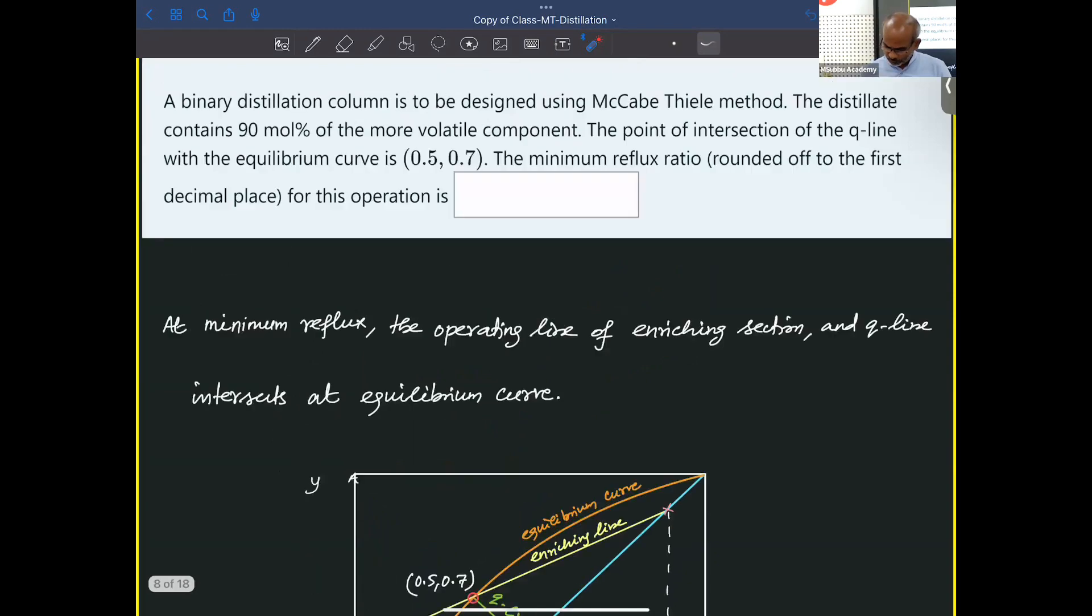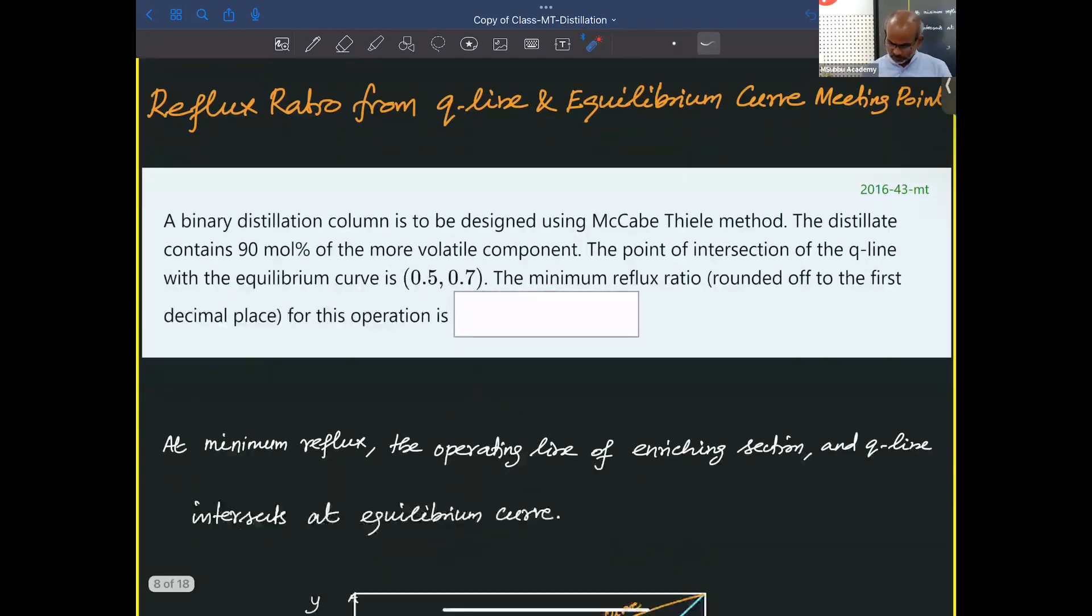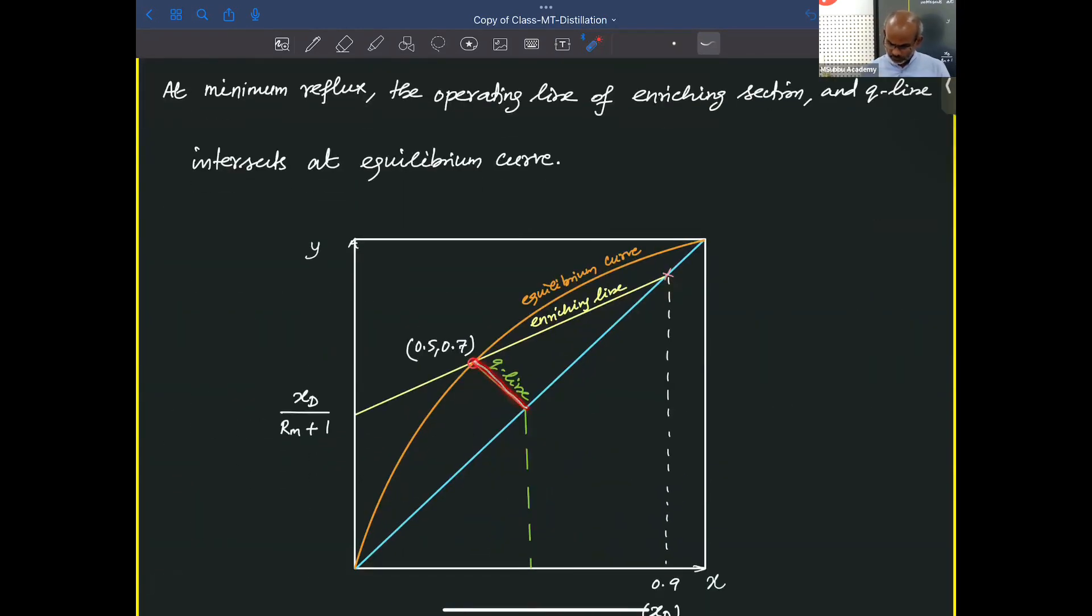What is asked is, we need to find the minimum reflux ratio. For minimum reflux ratio, the Q line and enriching line are cutting at this equilibrium curve. We are originally given with the meeting point of Q line and equilibrium curve. At the minimum reflux conditions, the enriching line just cuts this Q line exactly at the equilibrium curve.